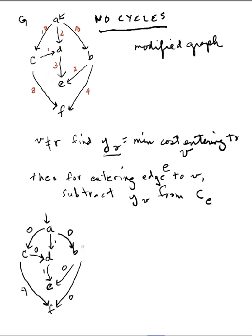Now the next step in the algorithm is for each vertex, V not equal to R, choose one zero cost edge.